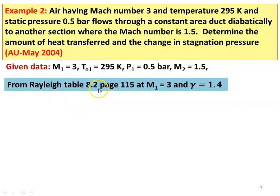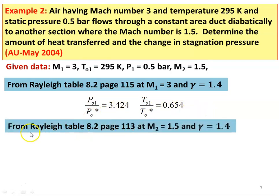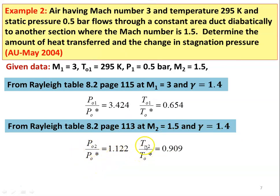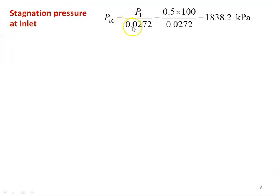From Rayleigh table 8.2, page 115, at M1=3, gamma=1.4: P01/P0* = 3.424, T01/T0* = 0.654. From Rayleigh table again at M2=1.5, gamma=1.4, page 113: P02/P0* = 1.122, T02/T0* = 0.909. From isentropic table 3.2, page 37, at M1=3, gamma=1.4: P1/P01 = 0.0272. Stagnation pressure at inlet: P01 = 0.5 × 100 / 0.0272 = 1838.2 kPa.